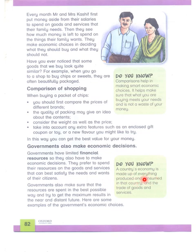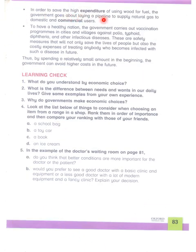Do you know a country's economy is made up of everything produced and consumed in that country, and the trade of goods and services? In order to save the high expenditure of using wood for fuel, the government lays pipelines to supply natural gas to domestic and commercial areas — تاکہ لوگ لکڑی ضائع نہ کریں اور گیس سے اپنی ضروریات پوری کر سکیں۔ This is an economic choice.